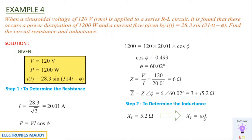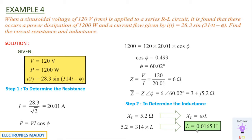Step two: find inductance. X_L = ωL. From the current equation, ω = 314 rad/s (not 2π×50 since frequency is embedded in the equation). Substituting X_L = 5.2 and ω = 314, we get L = 0.0165 H. So resistance = 3 ohms and inductance = 0.0165 H.